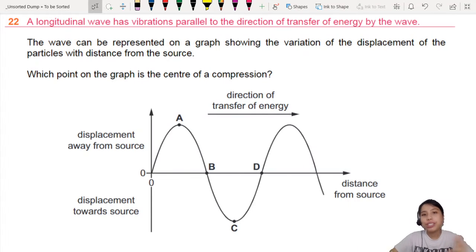A longitudinal wave has vibrations parallel to the direction of energy transfer. So the wave is represented by this graph right here showing displacement against distance. So I need you to know what we're looking at. Underline this if you did not: displacement, distance.